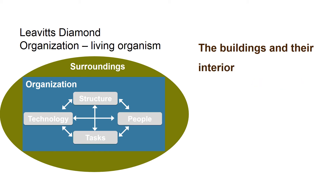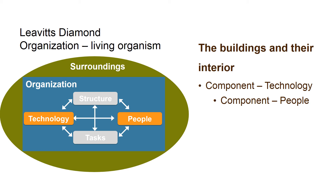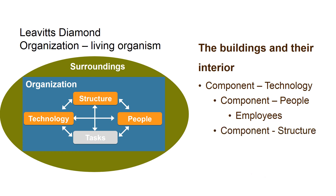The buildings and their interior — we start in the component Technology. But it will quickly affect the component People, since a new arrangement of desks affects the employees. The component Structure will probably also be affected, as new buildings and interior design will require a new communication and organizational structure.